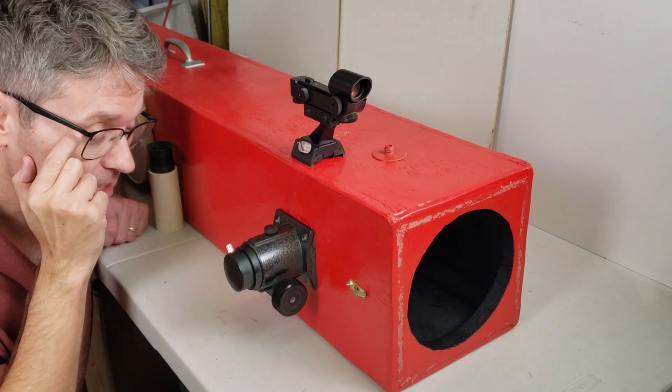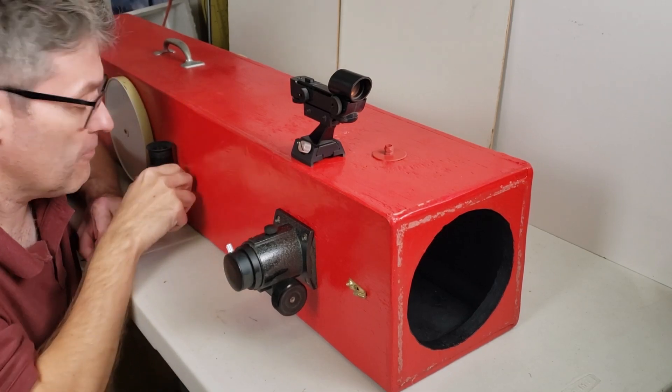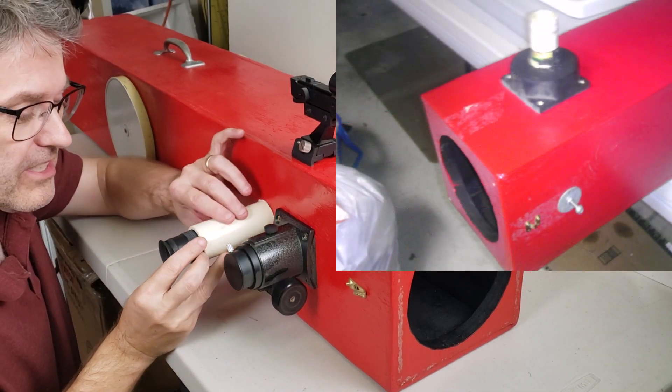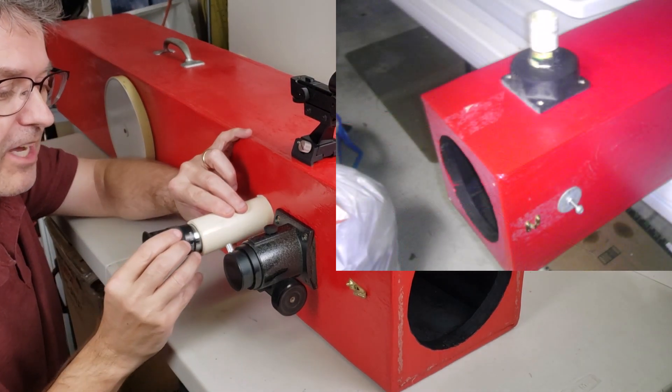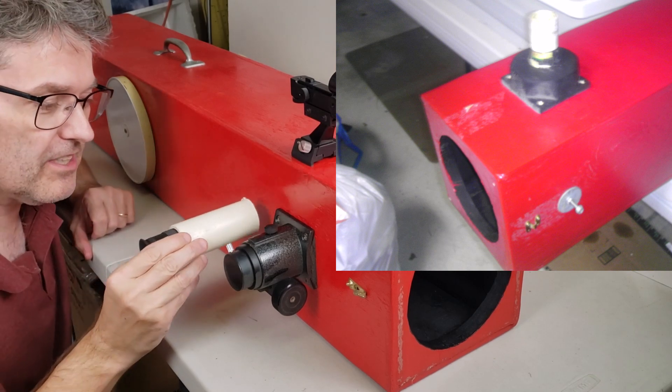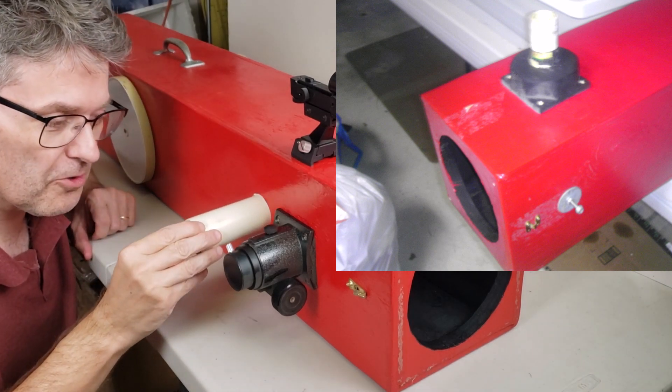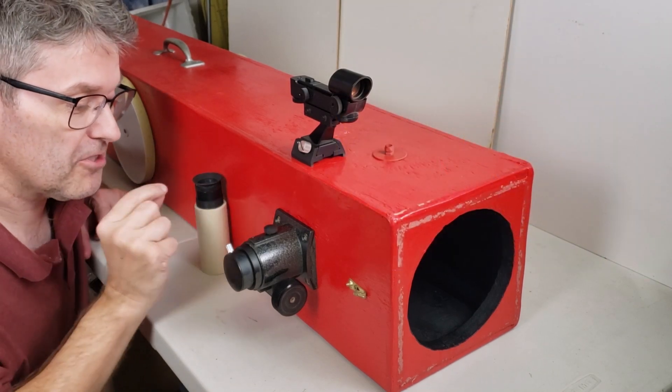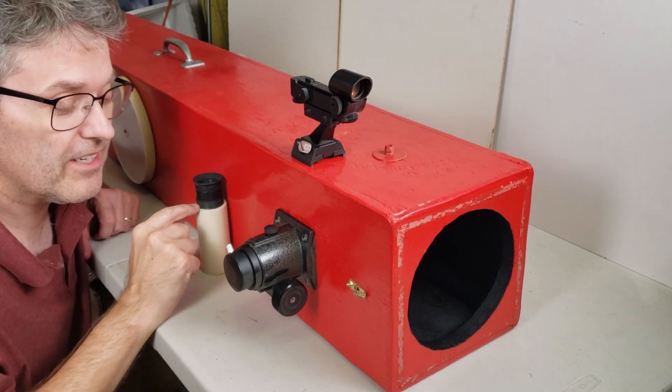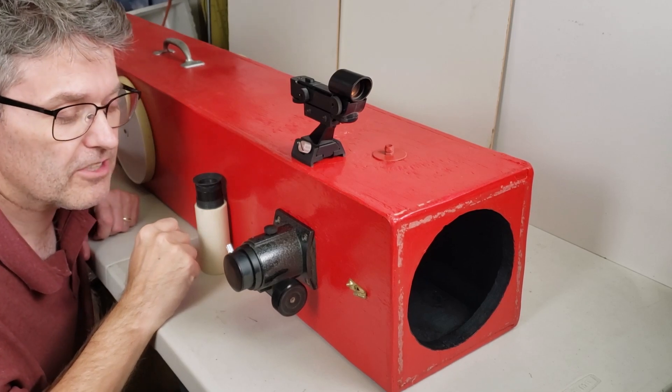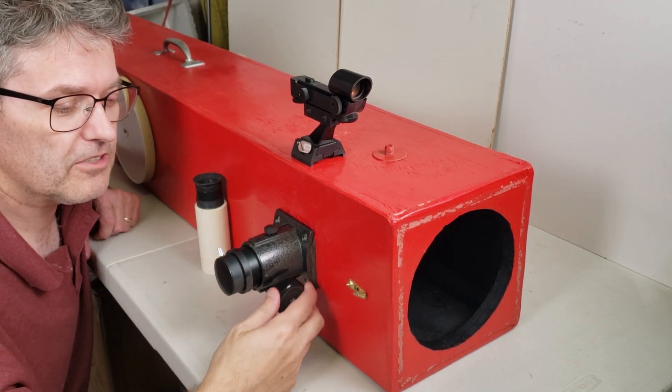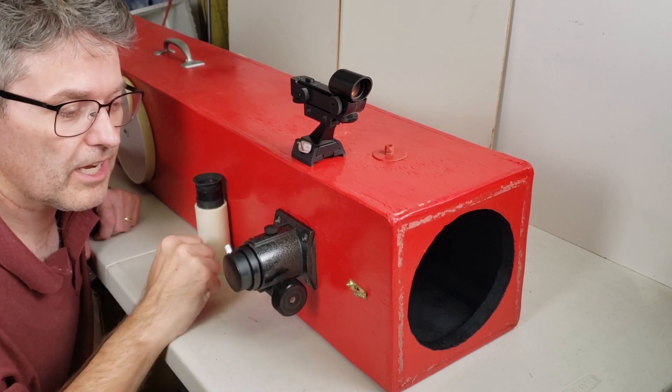Now, as far as the focuser goes, it was extremely simple. In fact, originally there was a block of 2x4 with a piece of PVC that was big enough for an eyepiece to go in, and this would just literally, I would wiggle it and slide it into the block and out of the block. I'm embarrassed to say that that was the way that I had this set up for many, many years, but I think around four or five years ago, I updated it to this used rack and pinion focuser.